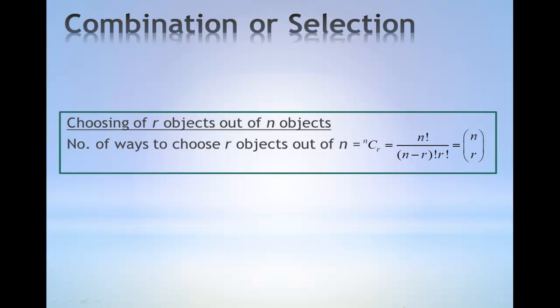Combination or what we call selection. The number of ways to choose r objects out of n objects is given by the notation nCr which has the value n factorial over n minus r factorial r factorial. This is an alternative notation for nCr.